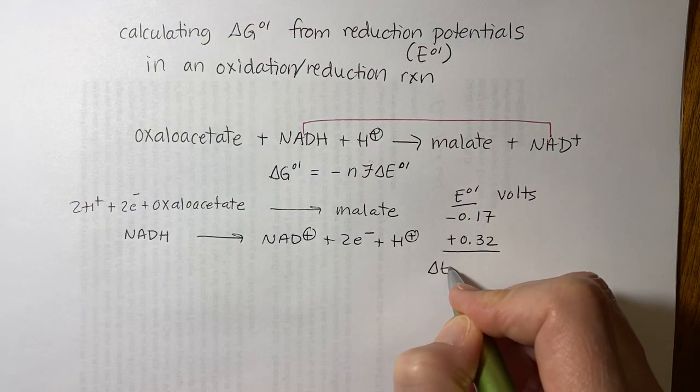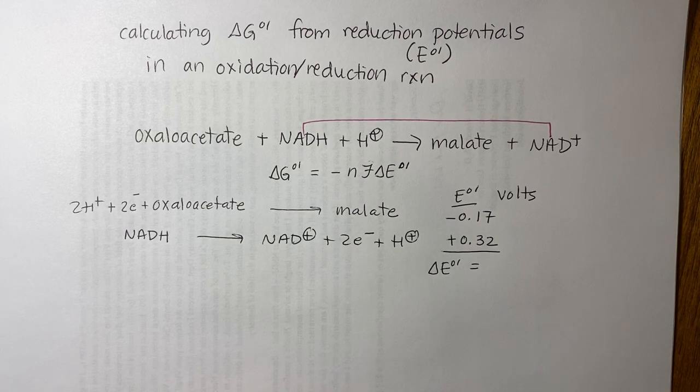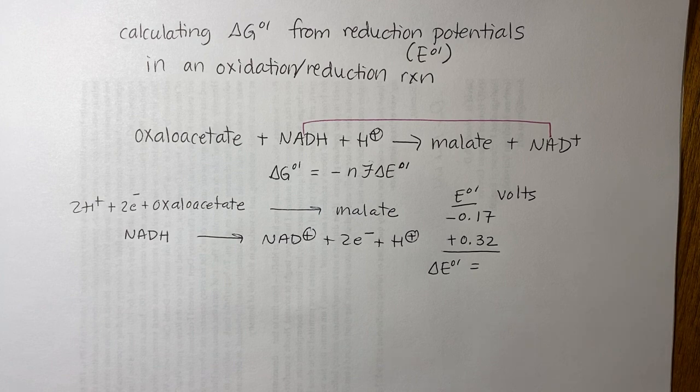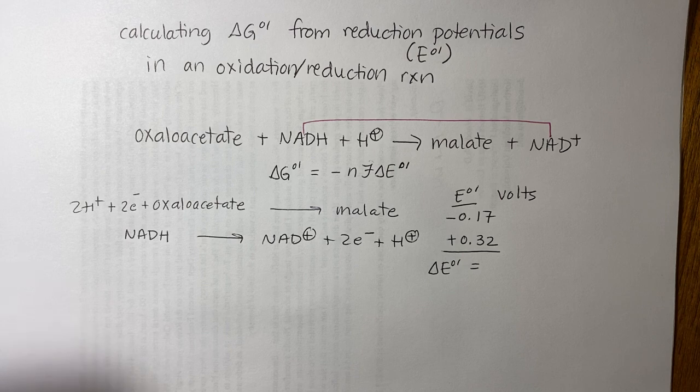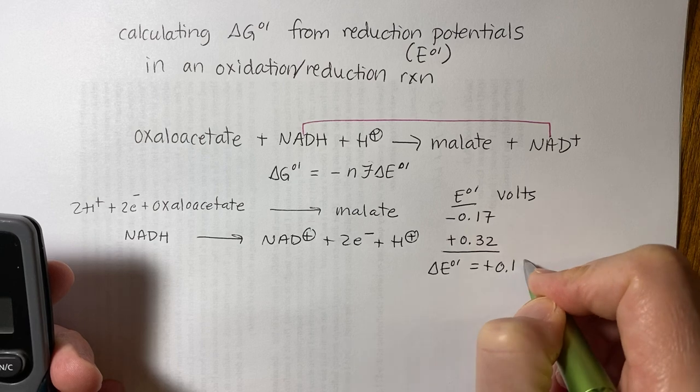The delta E not prime is just simply the addition there. So the answer we get is, I should be able to do this in my head, it's 0.32 minus 0.17. And that equals a plus 0.15 volts.